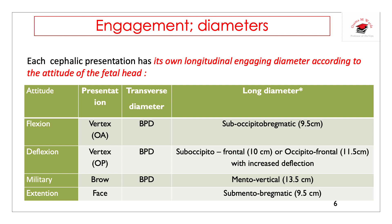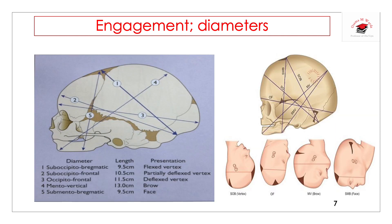Mento-posterior positions of the face are undeliverable presentations. To stress: the head has a common transverse engaging diameter which is the biparietal diameter, and different longitudinal diameters depending on the attitude of the head. The longitudinal diameters are: suboccipitobregmatic 9.5 cm (flexed), suboccipitofrontal 10.5 cm (partially flexed), occipitofrontal 11.5 cm (major deflection), mentovertical 13 cm (brow), and submentobregmatic 9.5 cm (face).